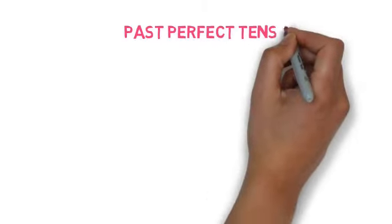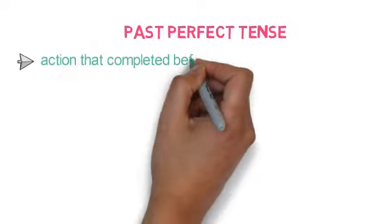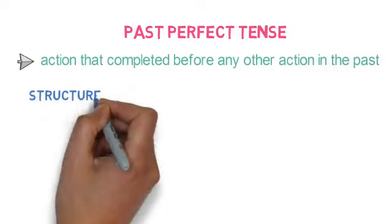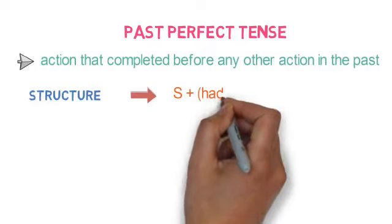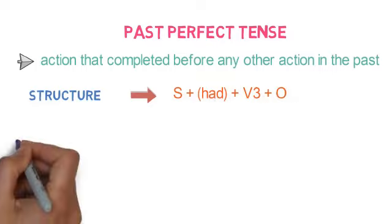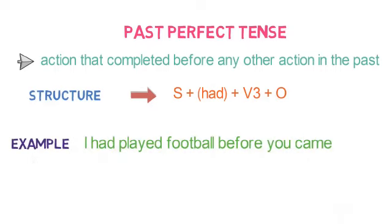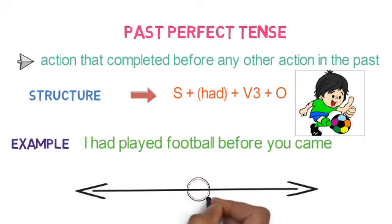Let's look into the next one: past perfect tense. It refers to an action that completed before any other action in the past. The structure of past perfect tense is: subject + had + verb's third form + object. For example, I had played football before you came. So, one action of playing was already completed before another action in the past. In the timeline, it will look like this.